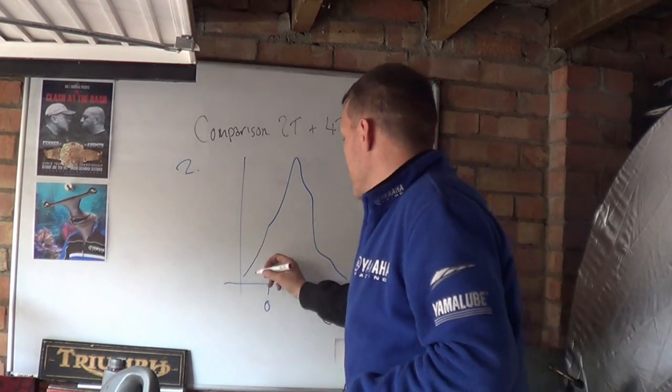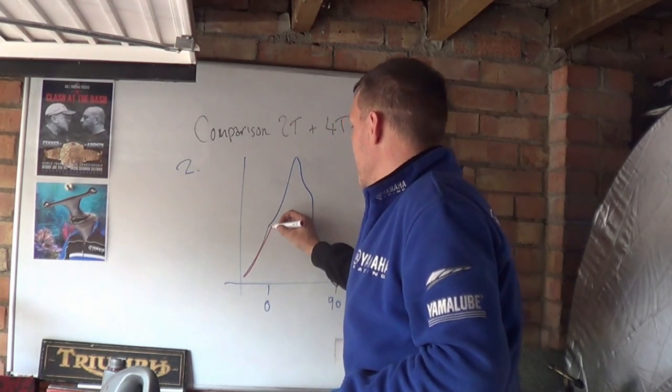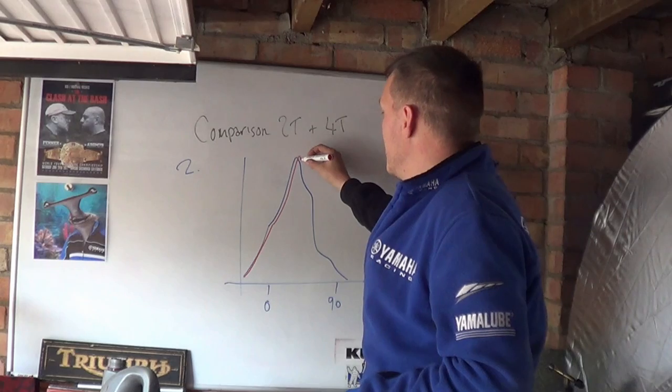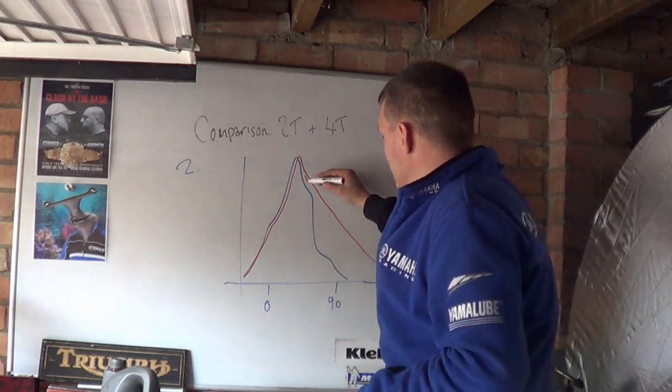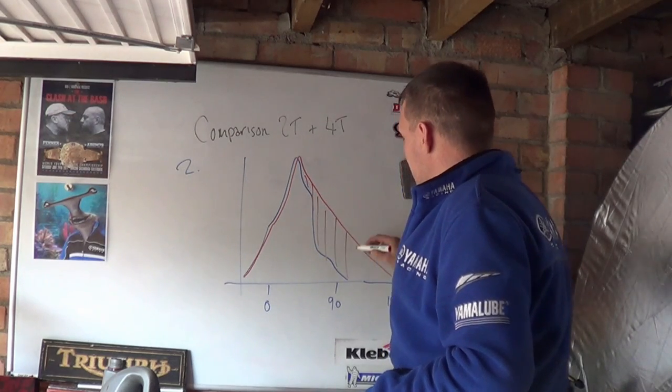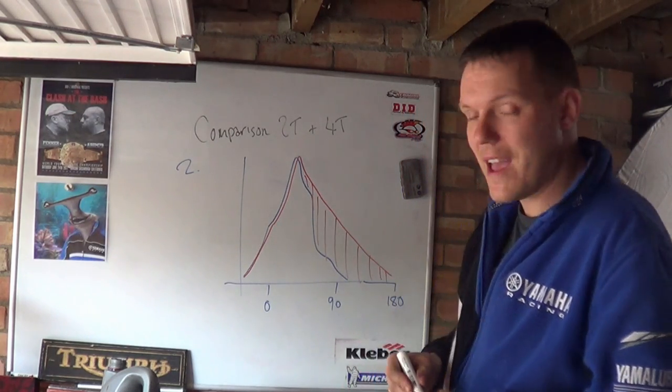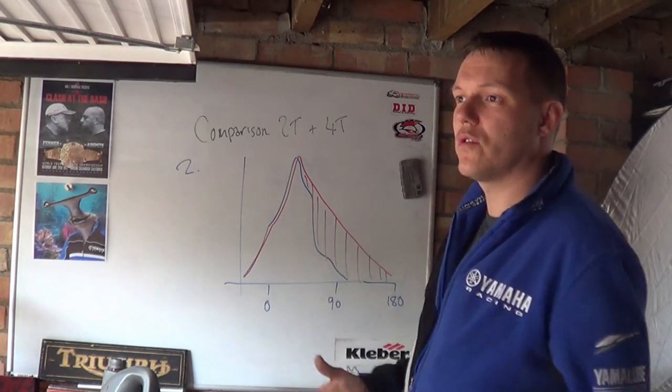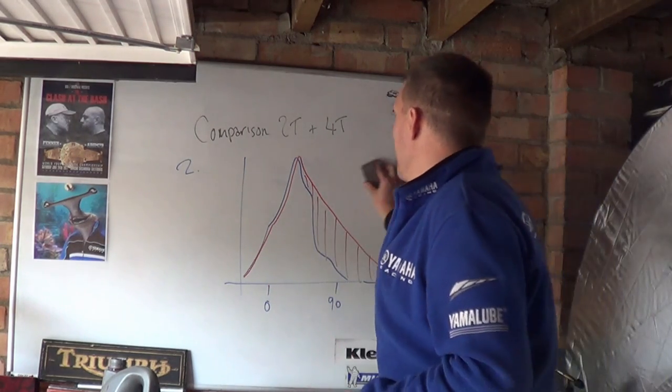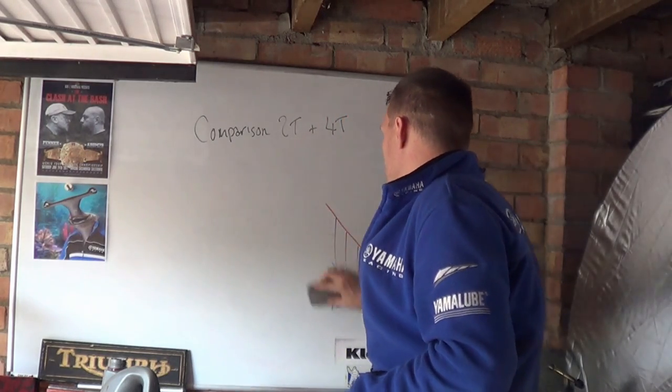Whereas with your four-stroke, a similar thing happens. You get your compression, you get your ignition, and it just slowly starts to cut off like that. And all this area here is the extra torque compared to a two-stroke that the four-stroke actually extracts from the combustion event that's just occurred.